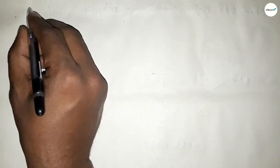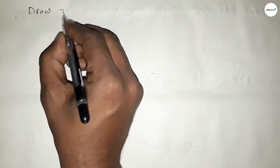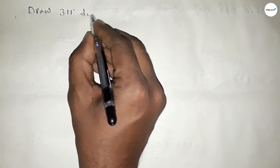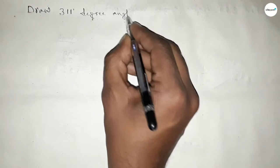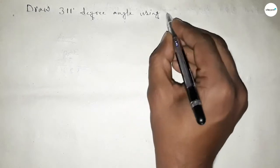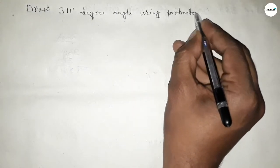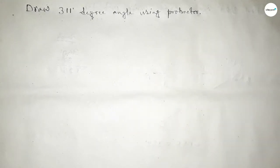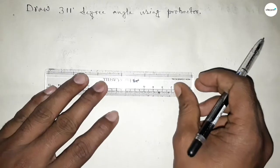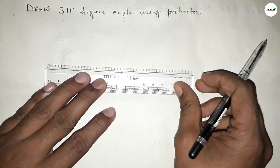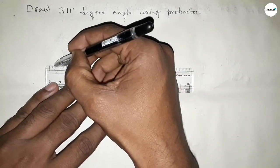Hi everyone, welcome to SSR Classes. Today in this video we have to draw a 311 degree angle by using a protractor. So let's start the video. First of all, we have to draw here a straight line of any length.